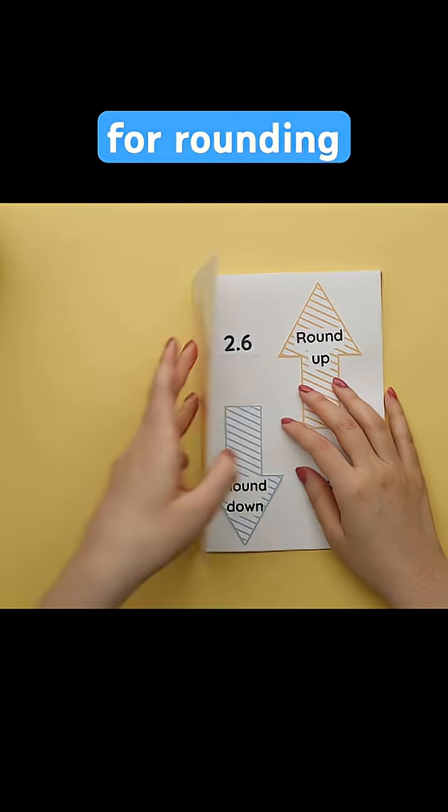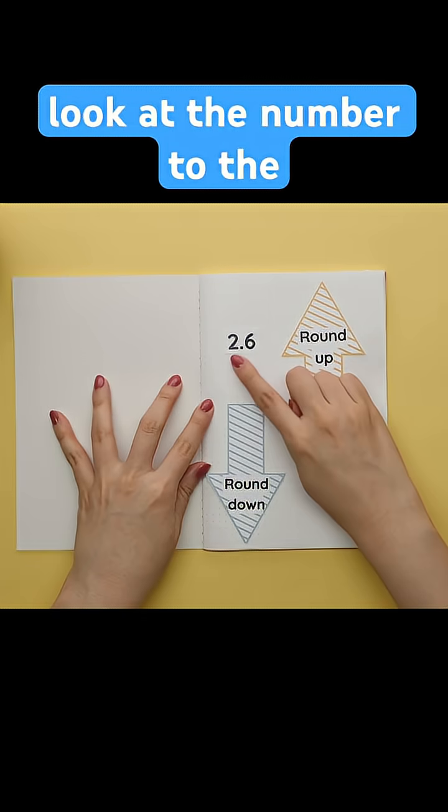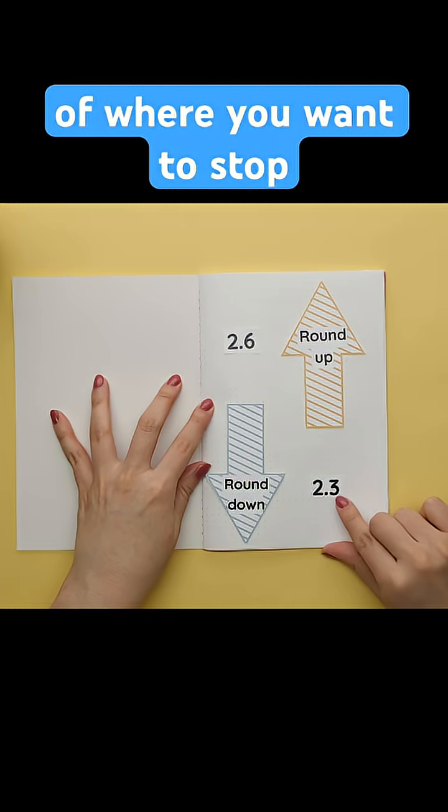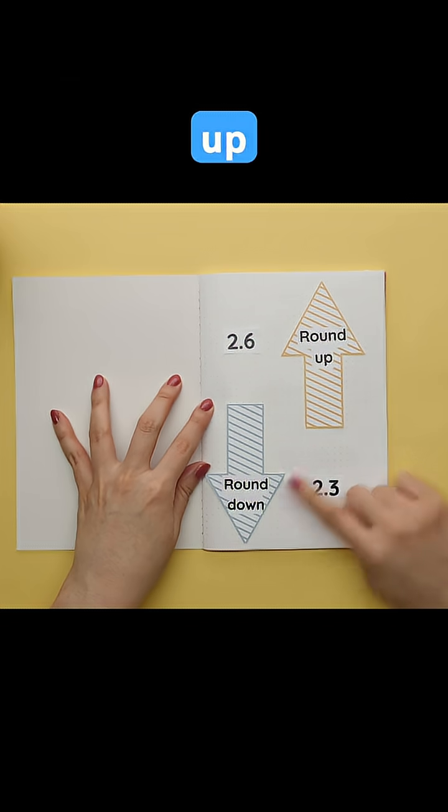So let's go over the rules for rounding. When rounding a number, always look at the number to the right of where you want to stop to determine whether to round up or down.